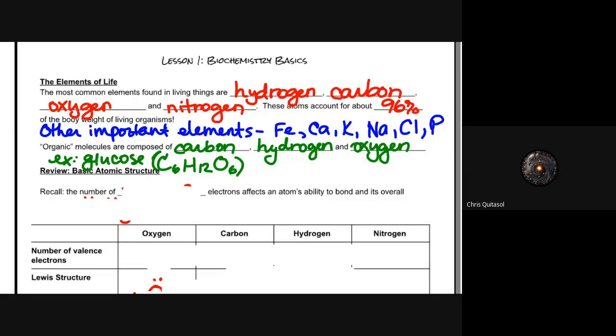Okay, so welcome again to lesson one with biochemistry basics. I was talking about the idea that those organic molecules that are composed of carbon, hydrogen, and oxygen—specifically things like glucose, which we will be focusing quite a bit on in this class—those organic compounds are super important for the biological makeups of all living organisms.